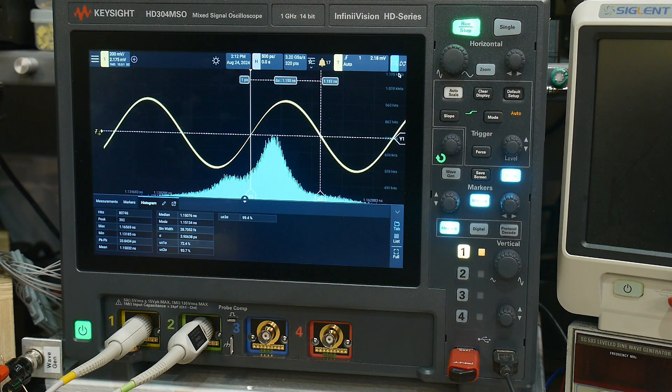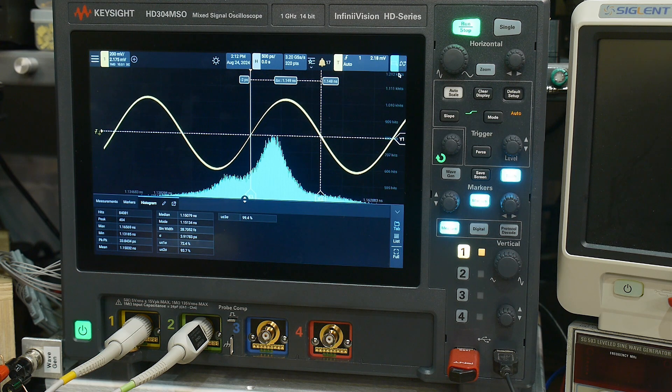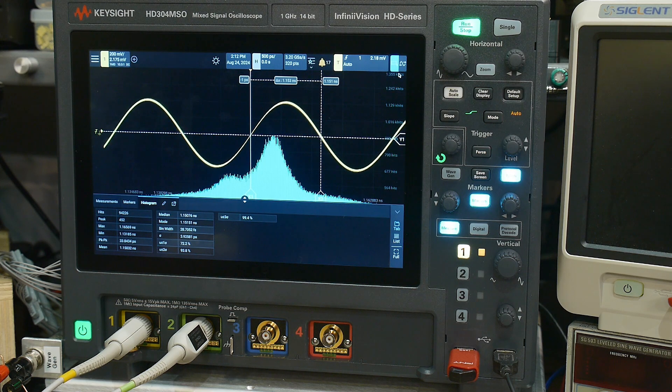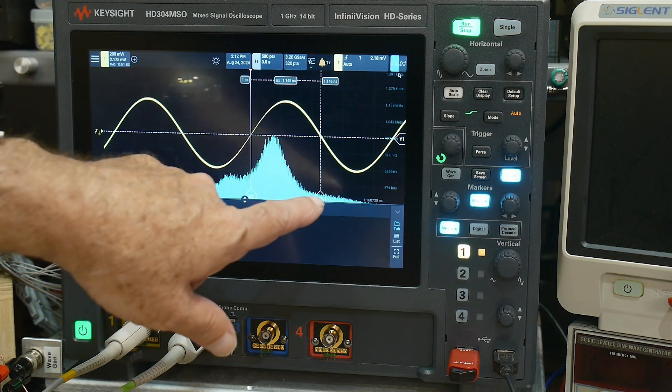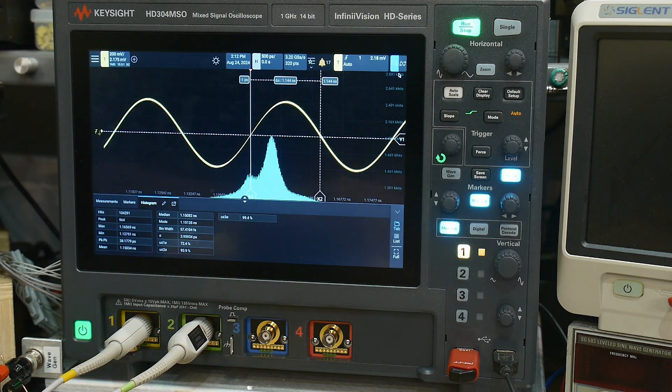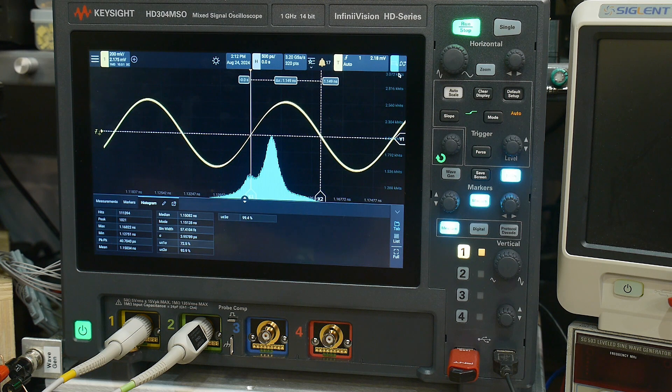And you can see that it is not Gaussian. We have sort of a Gaussian and then the second lump here. So it looks like there's maybe two modes of potential oscillation of this thing.